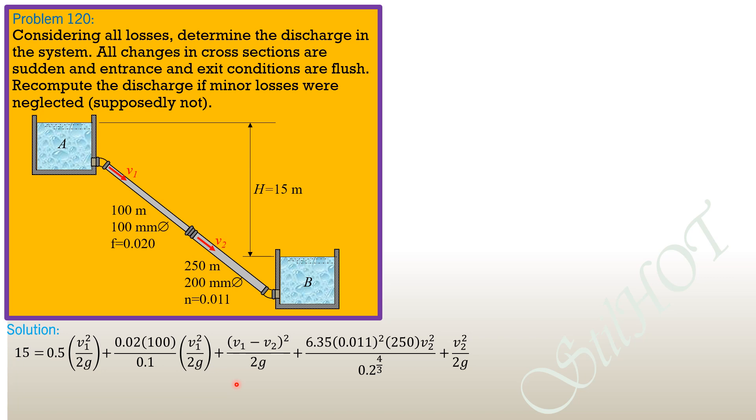Then we combine like terms. 2G is 19.62. So 15 equals 1.03625 V1 square plus quantity V1 minus V2 square over 2G, then plus combining these two is equal to 1.6933 V2 square.